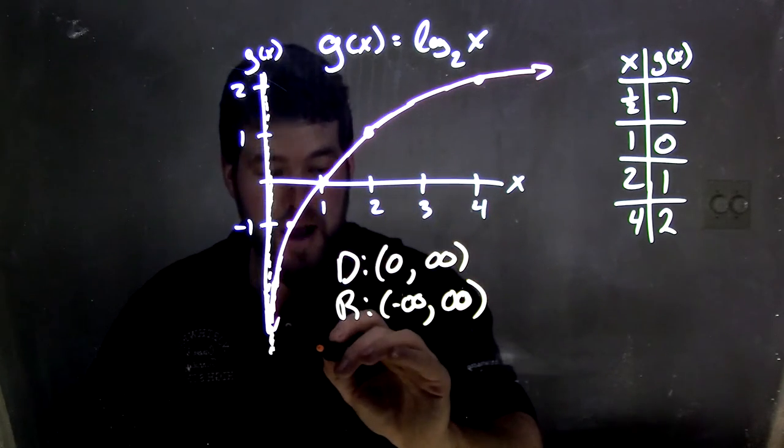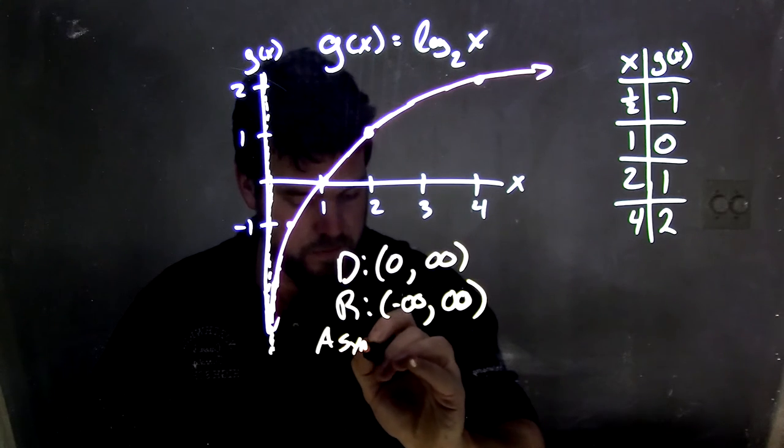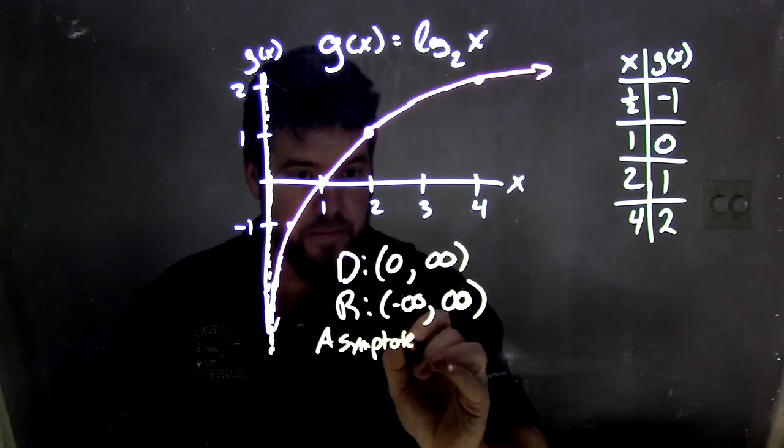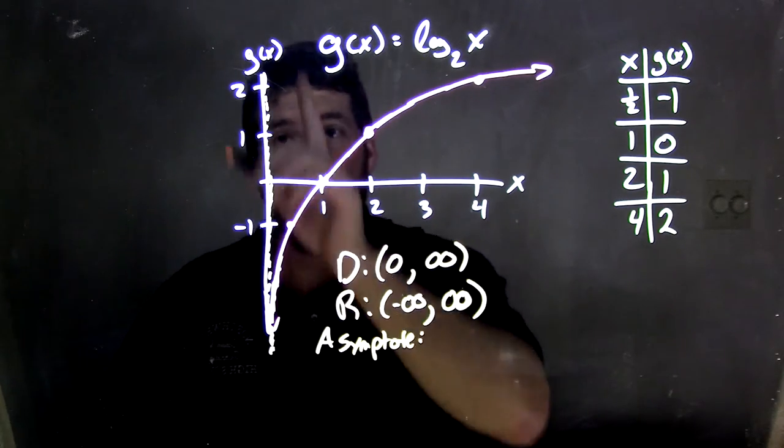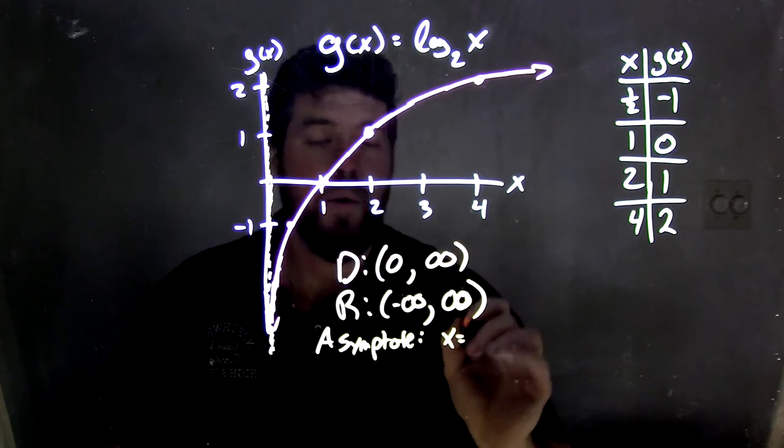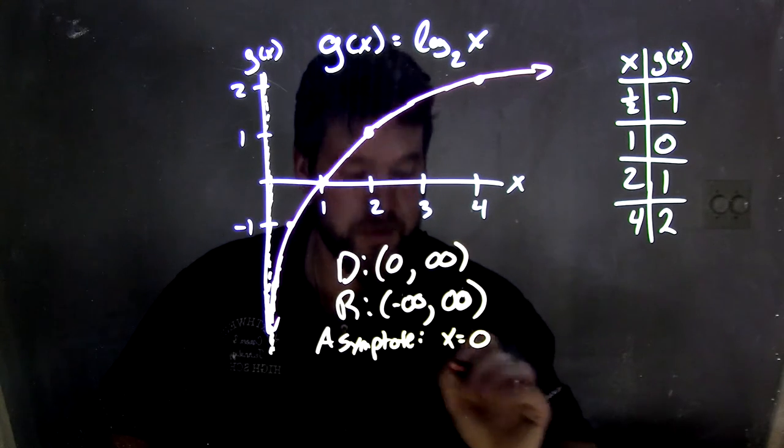Now we have an asymptote here, or an asymptote. We have a vertical asymptote, and that equation, if it's a vertical line, it's just x equals wherever it crosses the x-axis, in this case, it's zero. x equals zero.